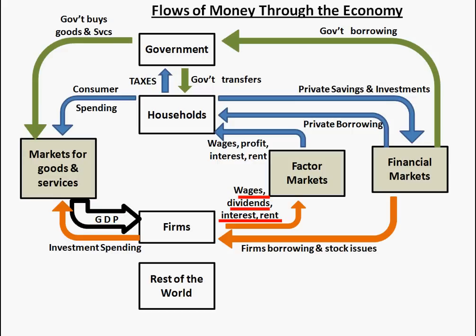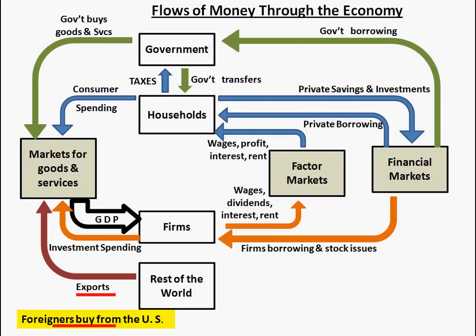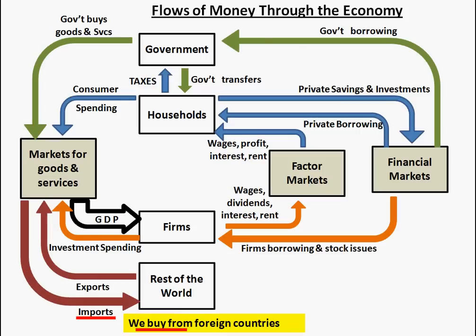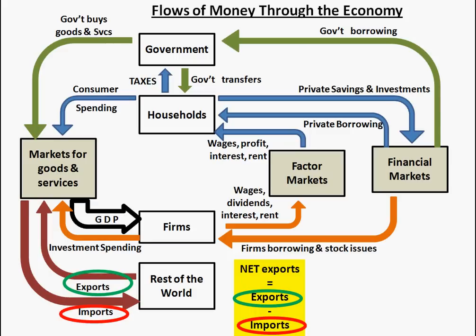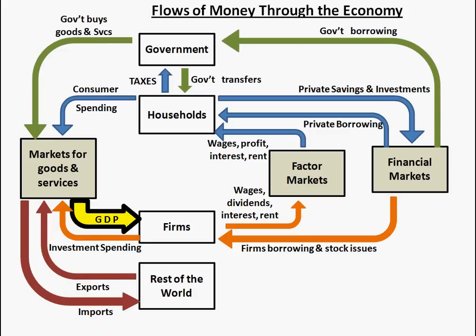From the money that firms collect, they pay out wages, dividends, interest, and rent. We also sell things to foreign countries — foreign countries buy from us, and the arrow going into the goods market shows money coming in from exports. We also buy from foreign countries — those are imports, and the money flows out to the rest of the world. Net exports is the total of exports minus imports — measuring how much money is coming into the country.